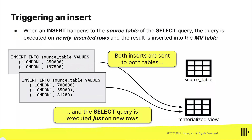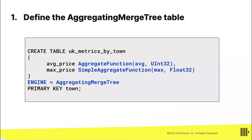When you define a materialized view, it has a source table. When you insert rows into the source table, those same rows get sent to the materialized view, but the materialized view never goes back to look at previous inserts. For example, if you insert two rows for London and then three more rows later, computing the average of just those three rows doesn't give you the correct running average across all five.